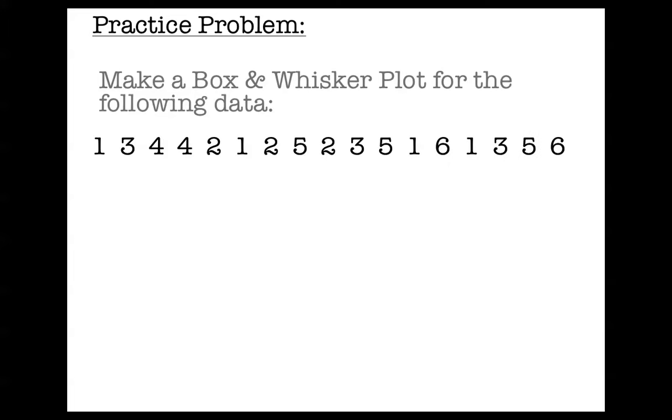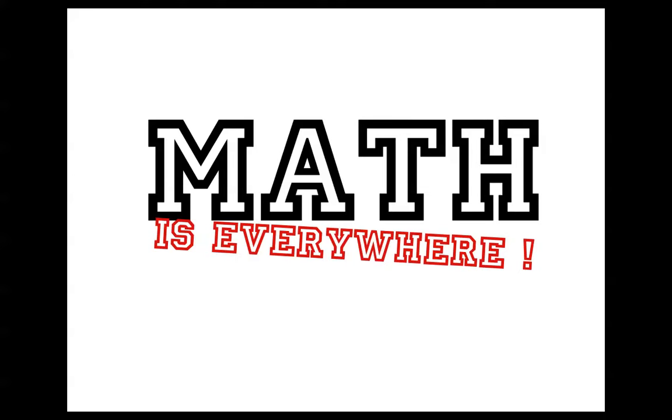So here's a practice problem. Make a box and whisker plot for this data. That's the same data that we used for our practice problem yesterday, by the way. And if you need to go back and rewind, go back and rewind. If you need to put these numbers in order from least to greatest, and you do, go ahead and do that. Then look for a median. Then look for a lower quartile. Then look for an upper quartile. And then see how low your left whisker is going to go and how high your right whisker is going to go. Line it all up against a number line, and you'll have yourself a beautiful little box and whisker plot. There you have it. Adios.